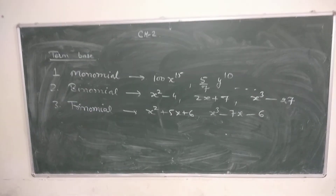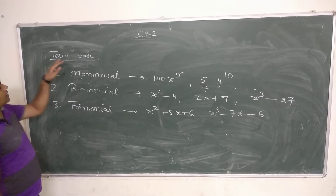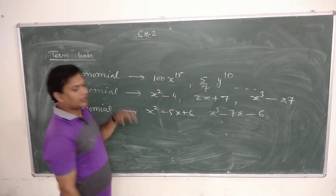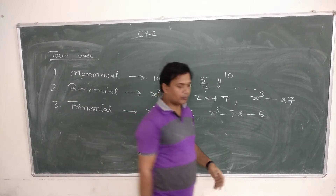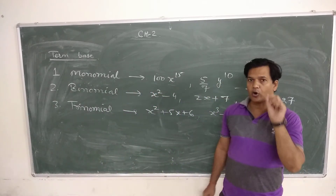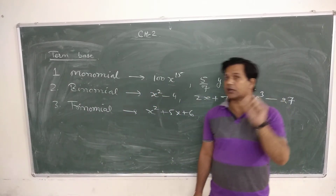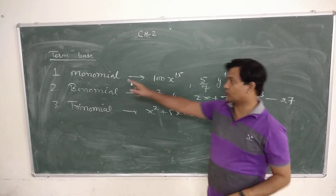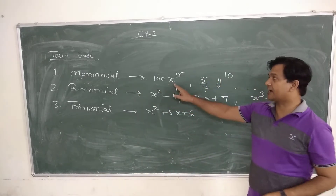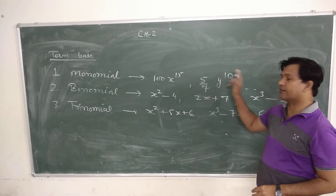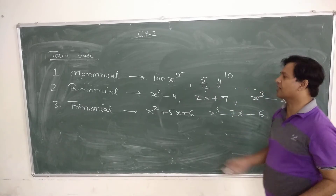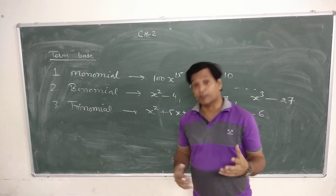We have defined the polynomial term as monomial. According to this monomial category, only one term appears in that polynomial. That kind of polynomial is said to be monomial, like 100x raised to 15, 5x raised to 7 raised to 10, and so on. That kind of polynomial is said to be monomial.